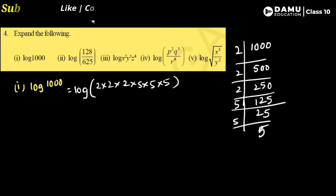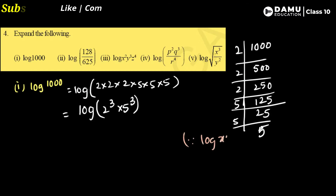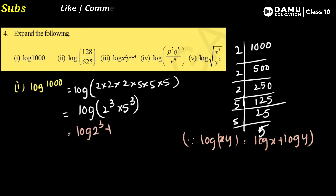So we can write log(2³ × 5³). Using the formula log(x × y) = log x + log y, we expand this to log(2³) + log(5³).